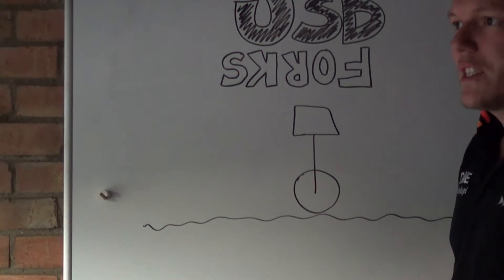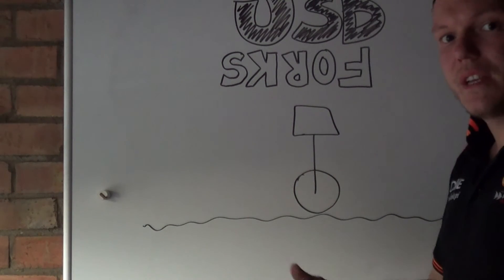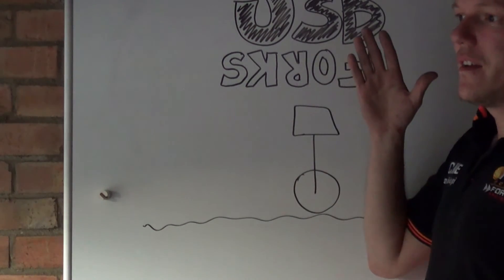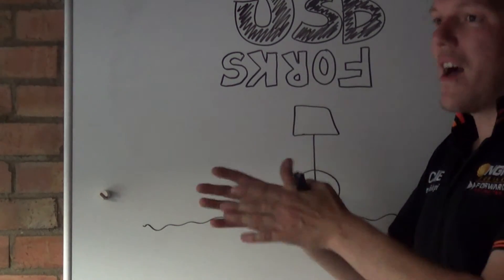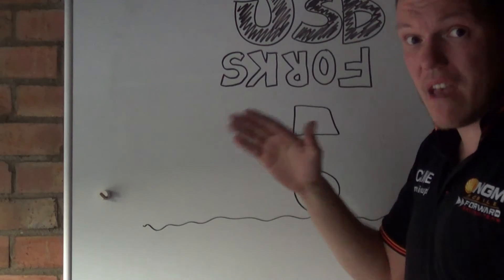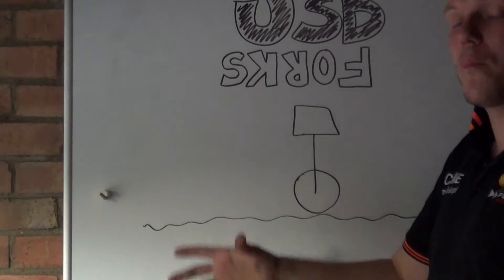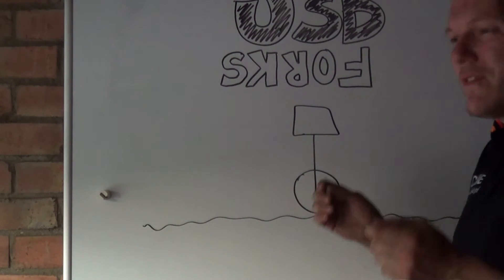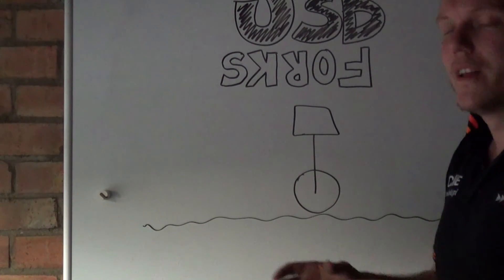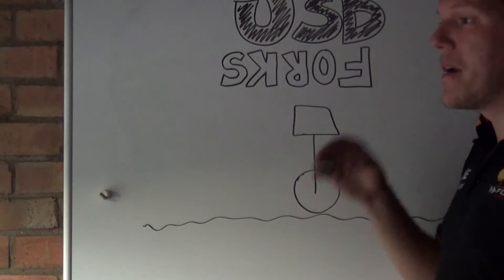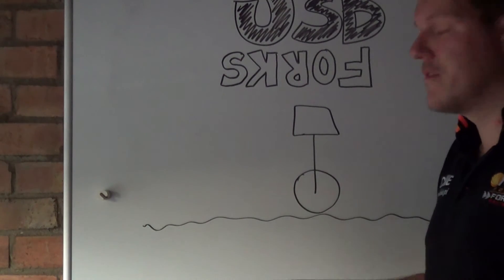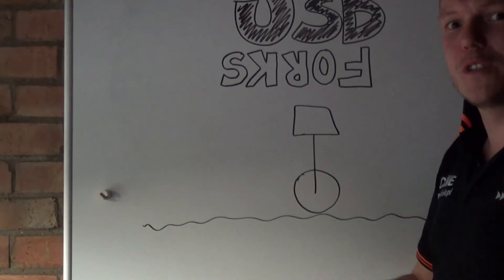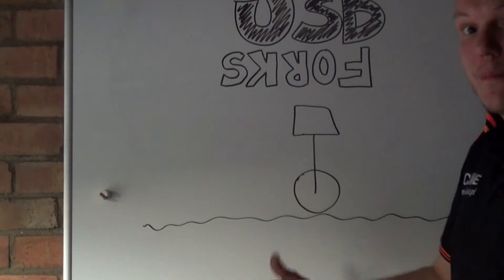So then the question has to be asked, is there any benefits from having an upside down fork? Is there any benefits from having a heavier mass, having the stanchion and the heavier tube at the bottom and the fork body at the top? When it comes to sprung and unsprung mass, it's a negative, but the negative is so incredibly small that the other positives from turning the fork upside down were more important than the unsprung, sprung mass debate argument.